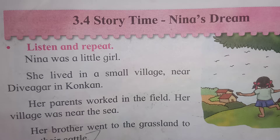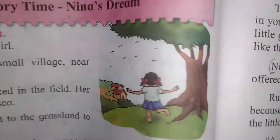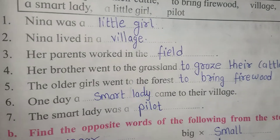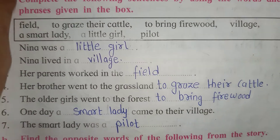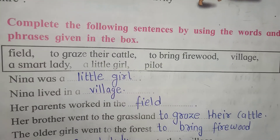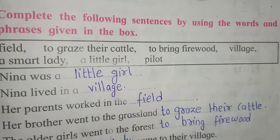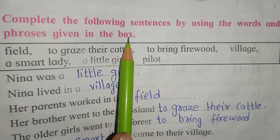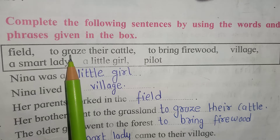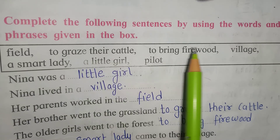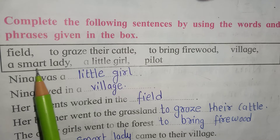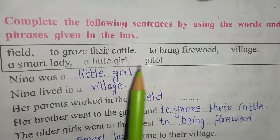I am here to help you with all the exercises for this lesson. First we will see Question A: Complete the following sentence by using words and phrases given in the box. The box contains the words: field, to graze their cattle, to bring firewood, village, a smart lady, a little girl, and pilot.